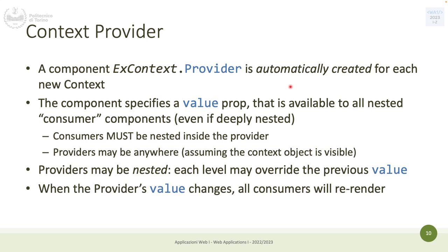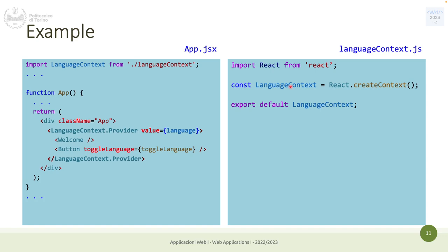You can also have multiple nested providers if needed. Importantly, when the provider value changes, all consumers will be re-rendered automatically — because if I provide a different language, all components that need that language must re-render. If I switch from English to Italian, all components reading this value are re-rendered, just like a state change. In the app, you can define a provider that wraps the entire application so everything has access.